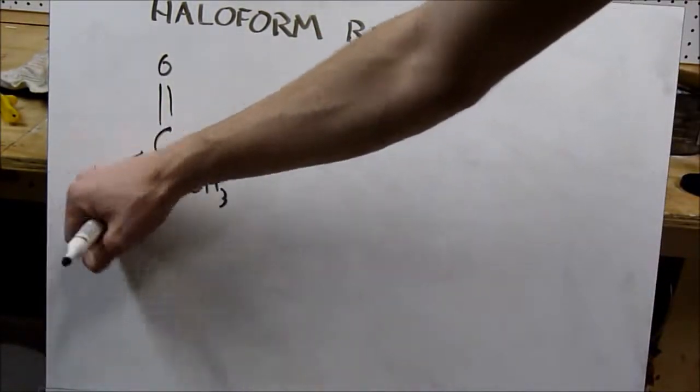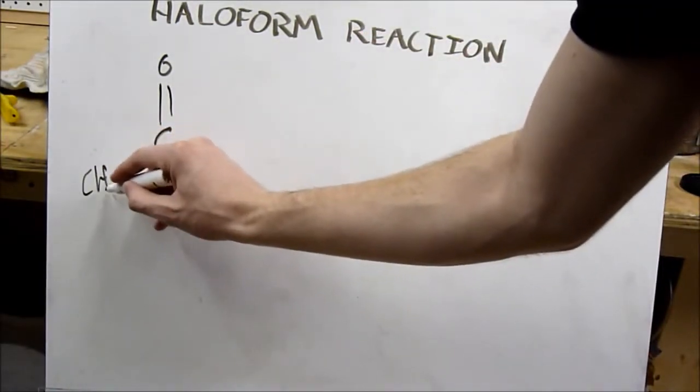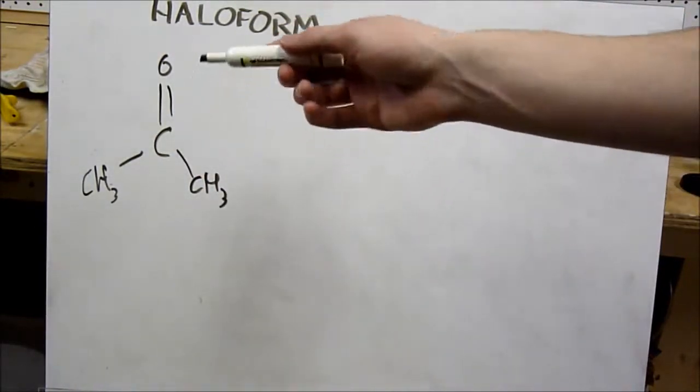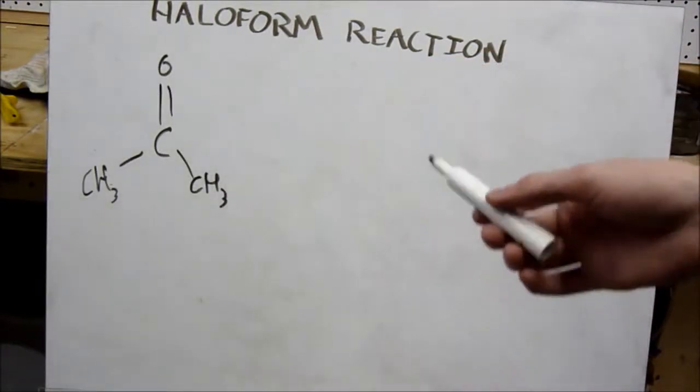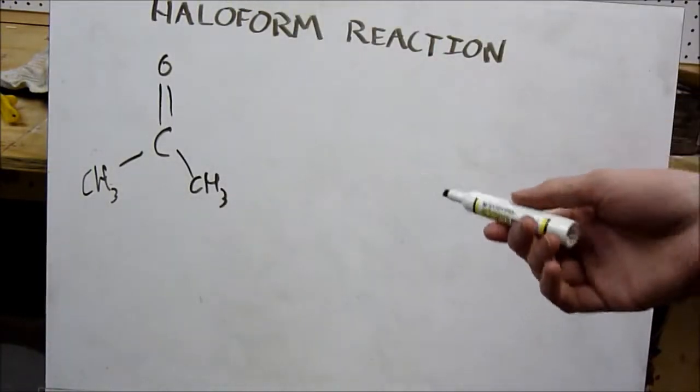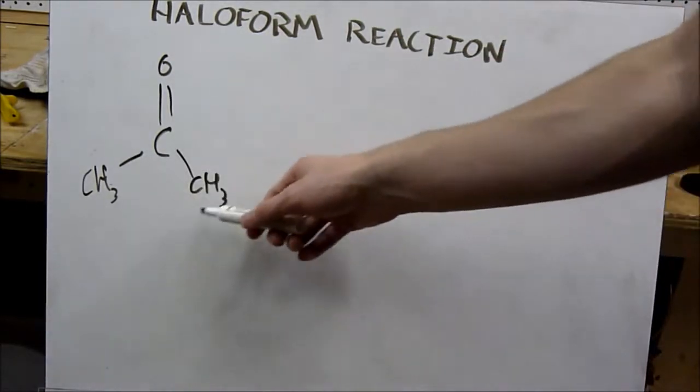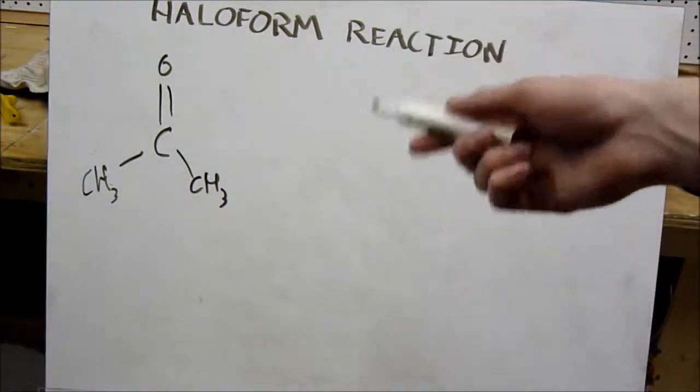In this case, we're using acetone, which is dimethyl ketone. So we have dimethyl ketone. Essentially, in basic conditions, this undergoes keto-enol tautomerization, which is a complicated process to explain, but essentially the double bond shifts positions. If there's a halogen present, it begins to halogenate one of the ends of these methyl groups here.